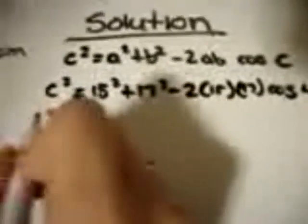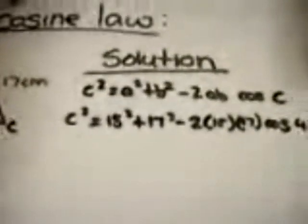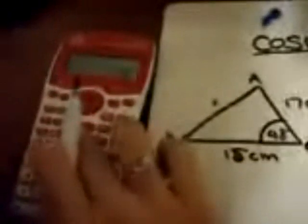We then plug this formula into our calculator. So we get 15 squared plus 17 squared minus 2 times 15 times 17 cosine 43. The value which we get is 141.